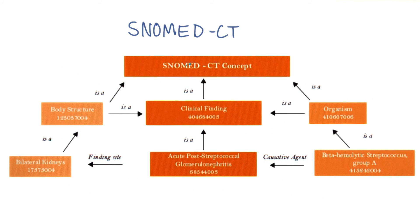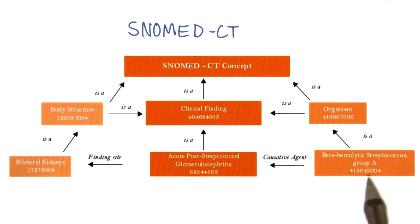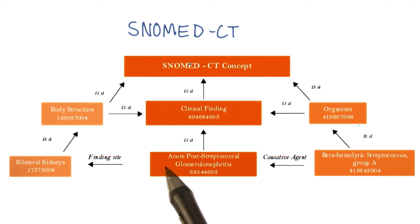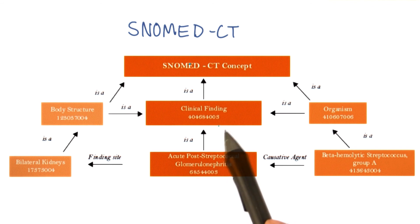The ability of SNOMED to represent medicine and medical concepts is illustrated here, where we see that the patient has a particular condition — acute post-streptococcal glomerulonephritis, a condition I actually had as a teenager. It's caused by group A beta-hemolytic streptococcus, which is an organism. It affects a body structure, the kidneys, and it's a clinical finding or a medical problem.